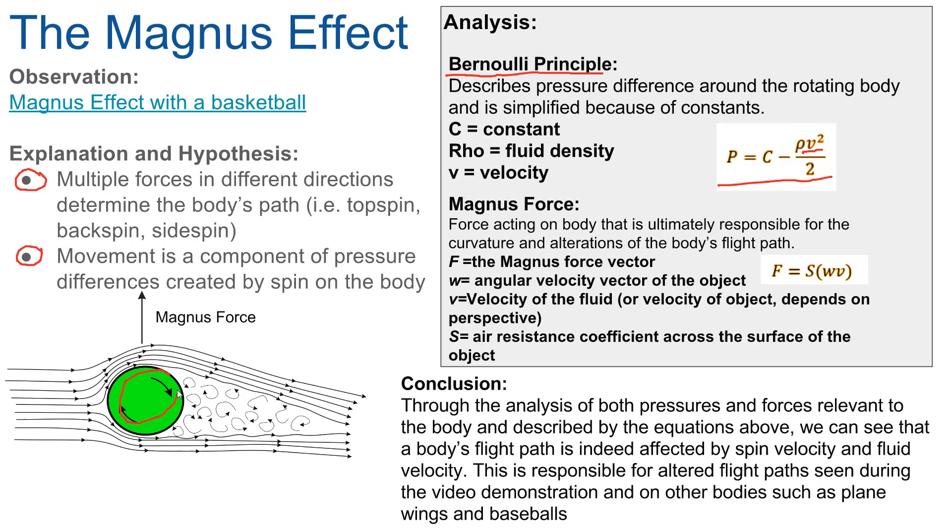As a ball spins, it deflects the airflow above it downward and creates a turbulent boundary layer on the air nearest to it. The deflection of air creates a force called the Magnus force, named after the German physicist Heinrich Gustav Magnus. The Magnus force is dependent on the angular velocity of the body and the velocity of the fluid that is hitting the body. Therefore, we can say that the Magnus force is equal to the equation seen below.